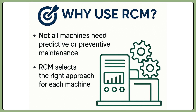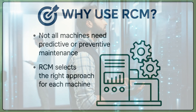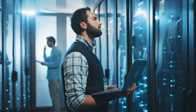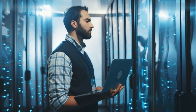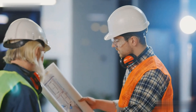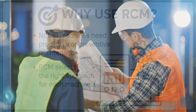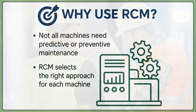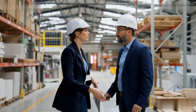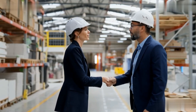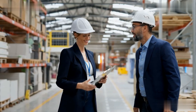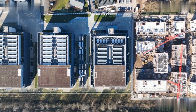Why is RCM important and why should one follow this practice in their plant? Imagine a factory with 200 machines — should you apply predictive maintenance to all of them, or run-to-failure for all? No, because each machine behaves differently. This RCM process helps us choose the right maintenance strategy based on how critical the equipment is, what happens if it fails, and how we can prevent it or reduce the impact of failure.